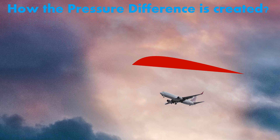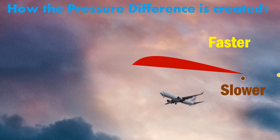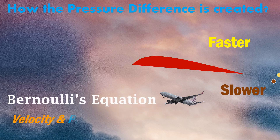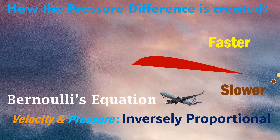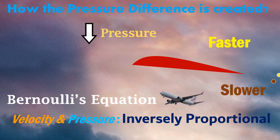So, let's see how this pressure difference is created for the lift. Because of the shape of the airfoil, the air particles flowing over the top surface travel faster than the air particles at the bottom. According to Bernoulli's equation, velocity and pressure are inversely proportional. This means that on the top surface, the velocity is more and the pressure is less. And at the bottom surface, the velocity is less, so the pressure is more.